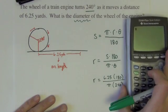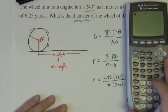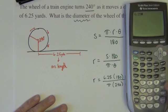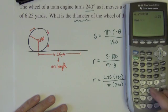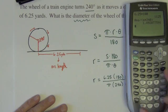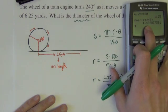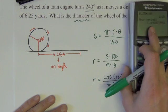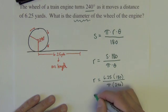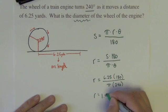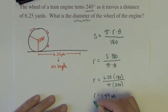So let's do that here. And so it looks like about to two decimal places, 1.49. We'll just go with that. So r equals 1.49 yards.